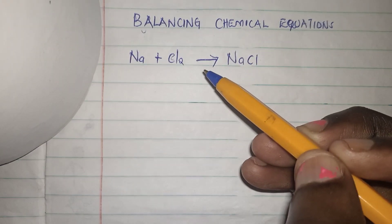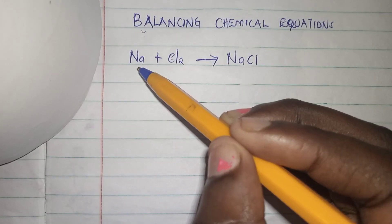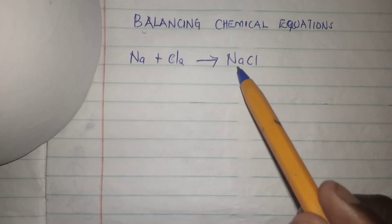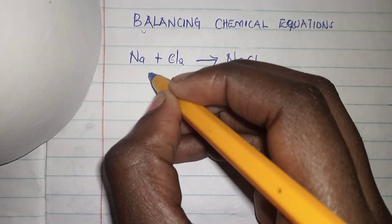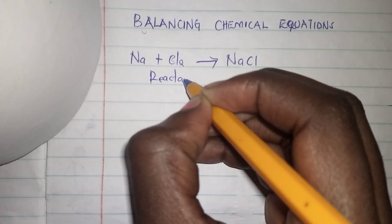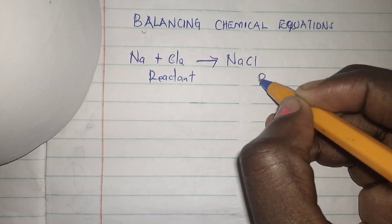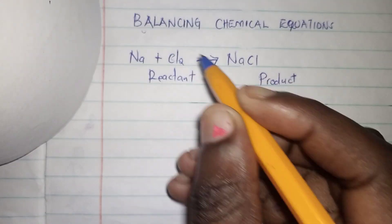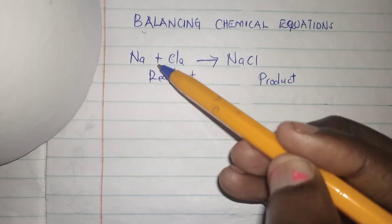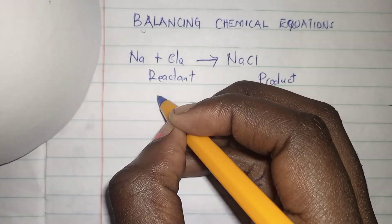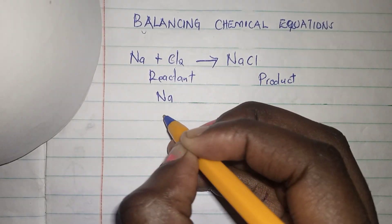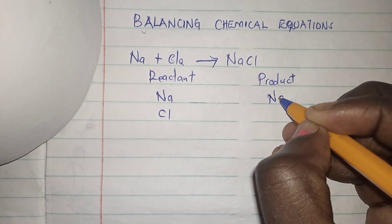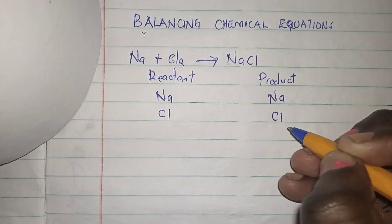Now when we want to balance the equation, the first step is you count the elements or the atoms on the reactant side. This is the reactant side and this is the product side. The first step: you count the atoms of each element on the reactant side. We have sodium and we have chlorine. On the product side we also have sodium and chlorine.